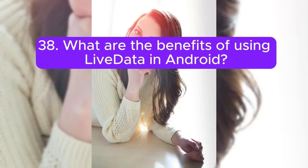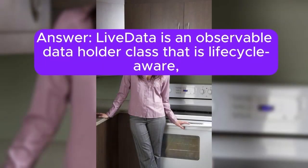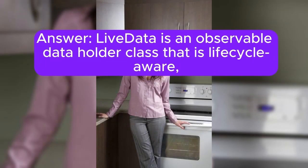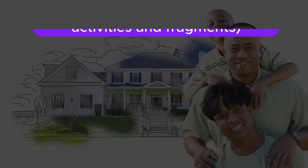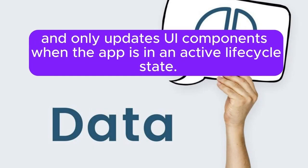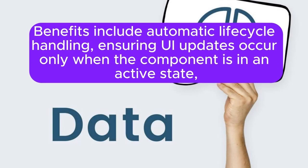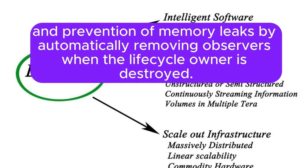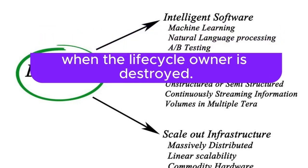Question 38: What are the benefits of using LiveData in Android? LiveData is an observable data holder class that is lifecycle-aware, meaning it respects the lifecycle of app components like activities and fragments and only updates UI components when the app is in an active lifecycle state. Benefits include automatic lifecycle handling ensuring UI updates occur only when the component is active, and prevention of memory leaks by automatically removing observers when the lifecycle owner is destroyed.